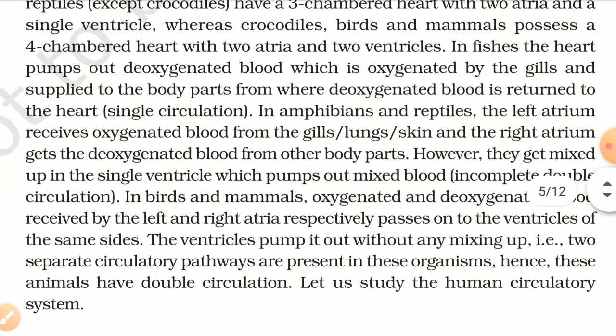In amphibians and reptiles, the left atrium receives oxygenated blood from the gills, lungs, or skin, and the right atrium gets deoxygenated blood from other body parts. However, they get mixed in the single ventricle, which pumps out mixed blood — this is incomplete double circulation. In birds and mammals, oxygenated and deoxygenated blood received by the left and right atria respectively pass to the ventricles of the same side without mixing — hence these animals have complete double circulation.